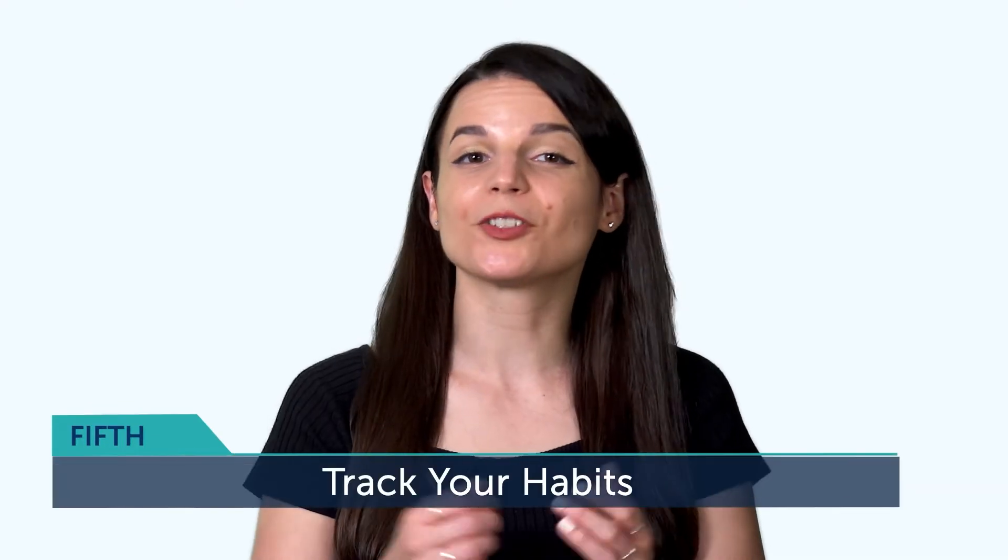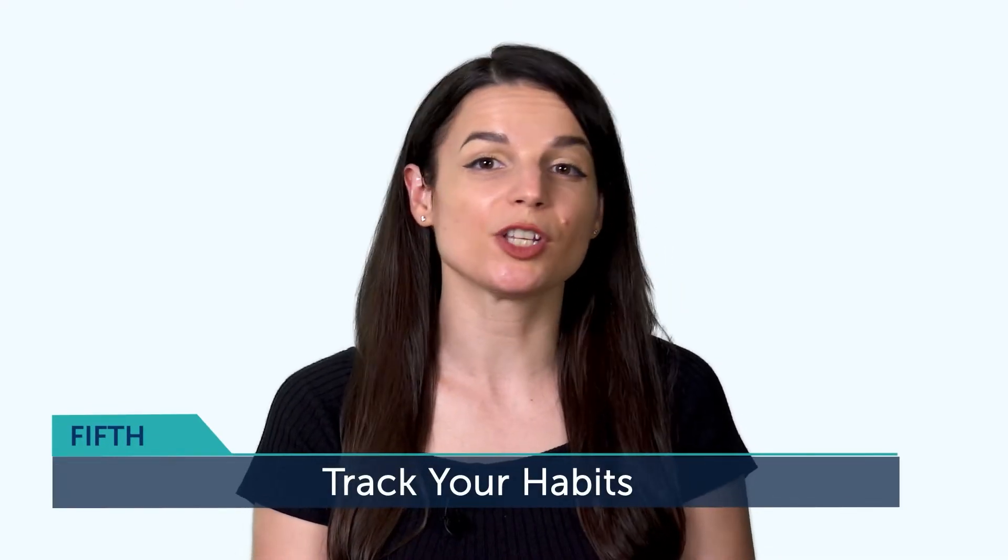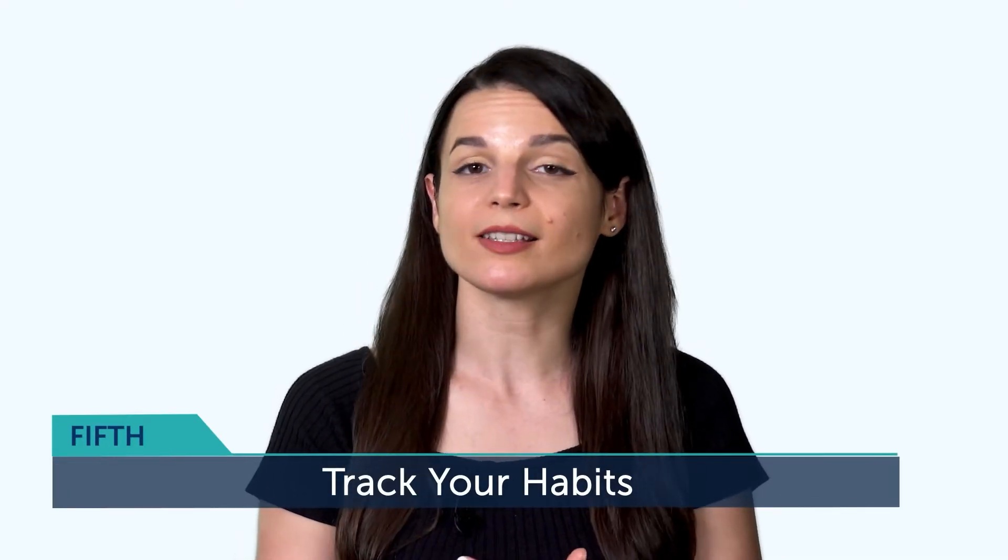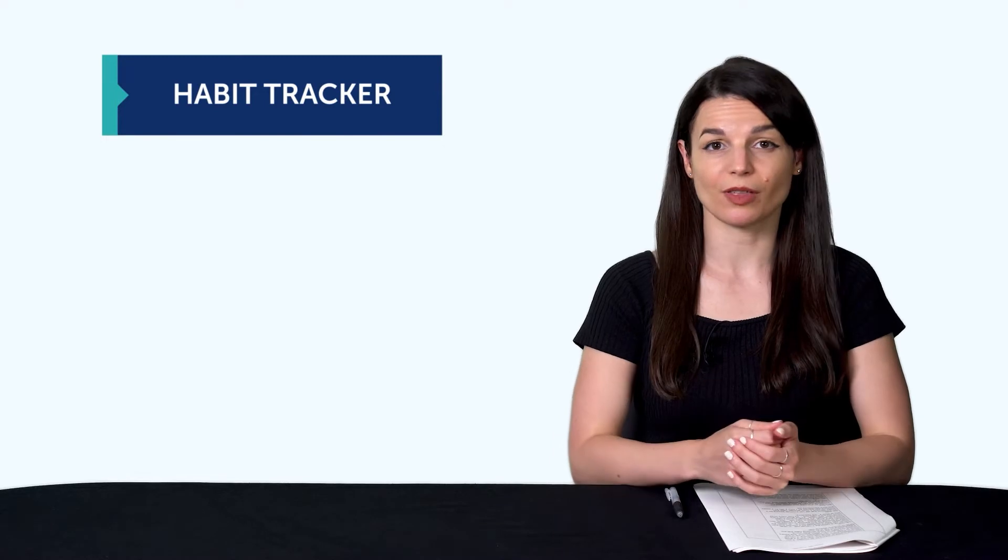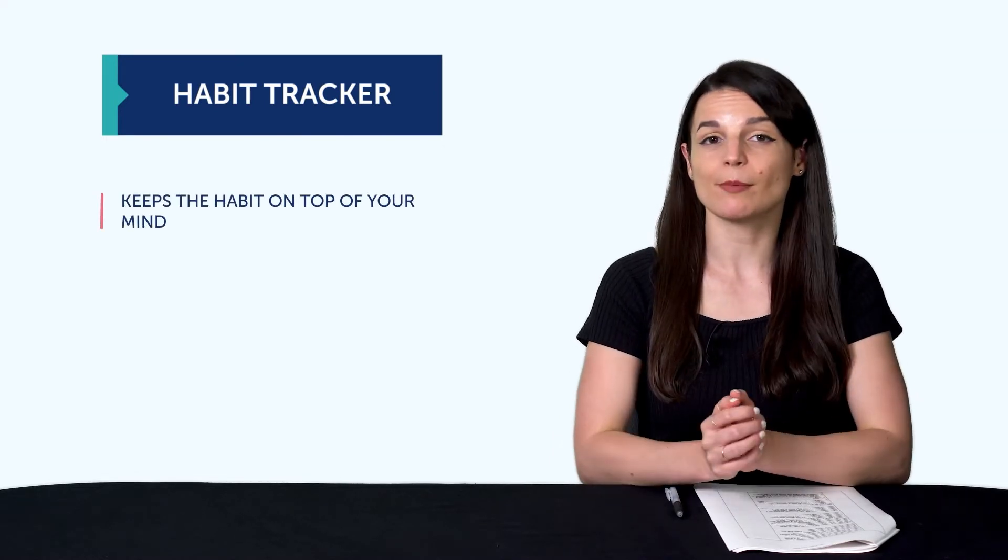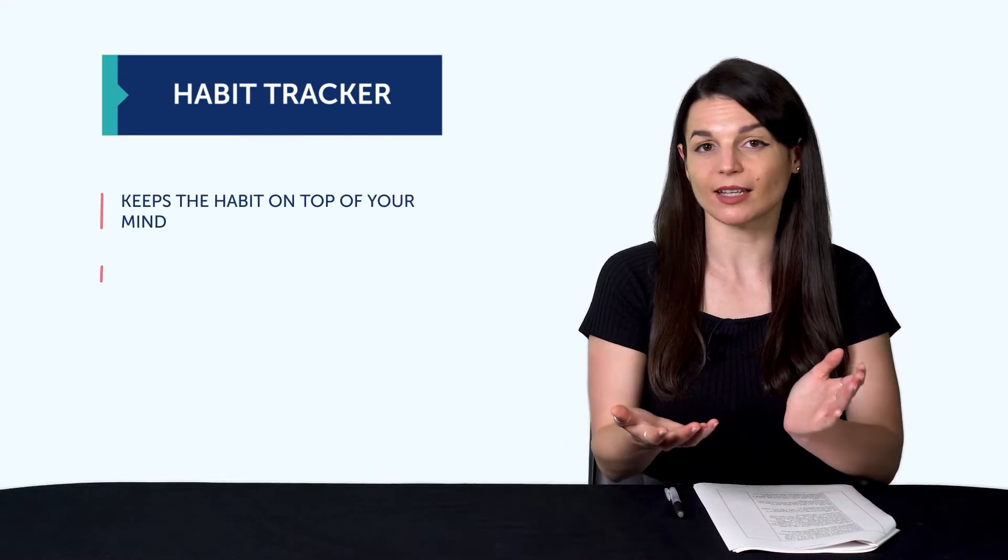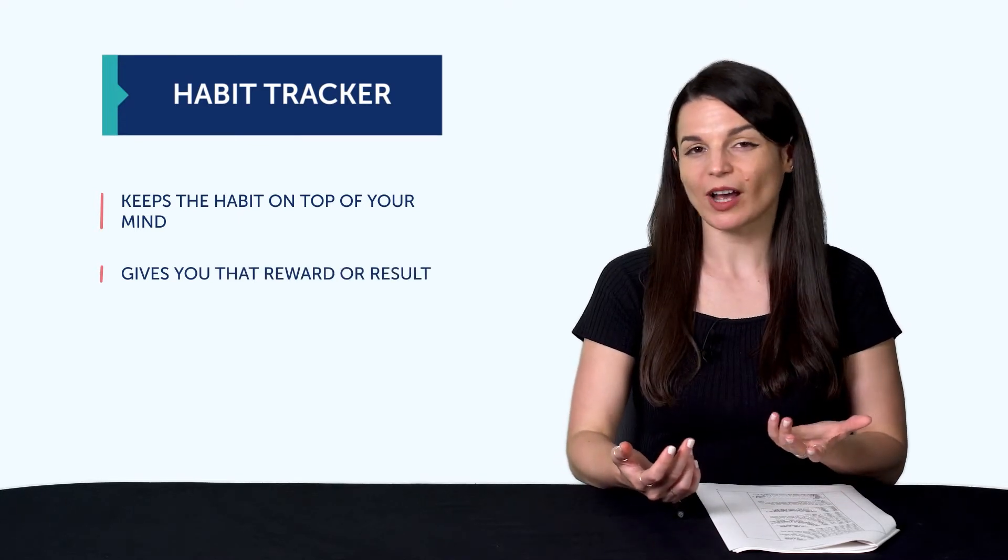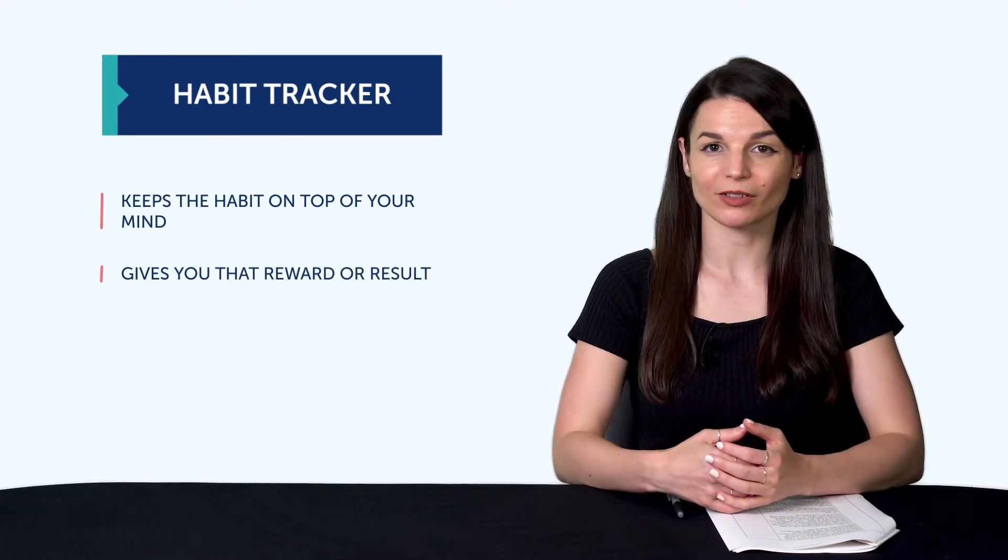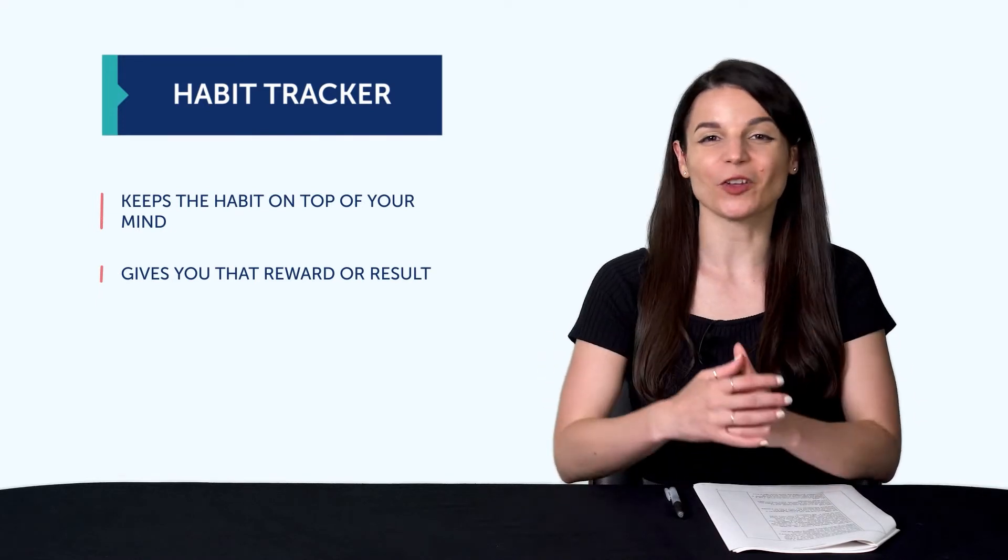The fifth tip is to track your habits. And it's something you can do with a calendar, where you cross the days on a calendar every time you learn your target language. Having that habit tracker does two things. First, it keeps the habit on top of your mind. And second, it gives you that reward or result. So, if you're consistent, you have the visual proof right in front of you. If you're not, well, at least now you know your progress.